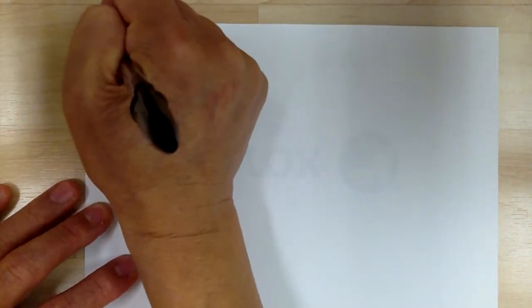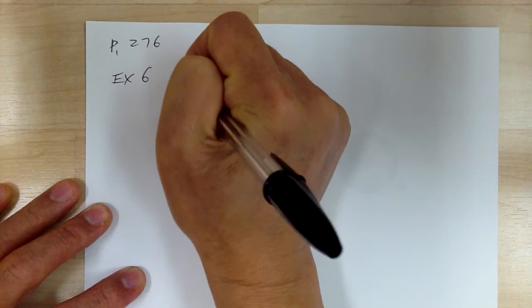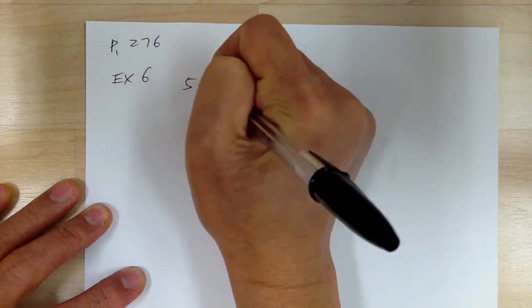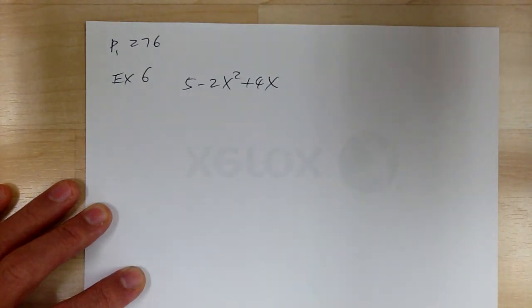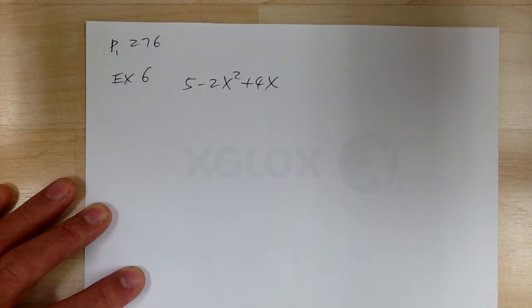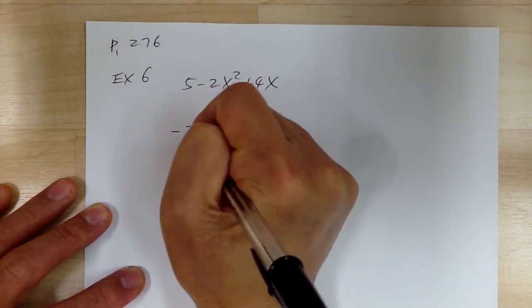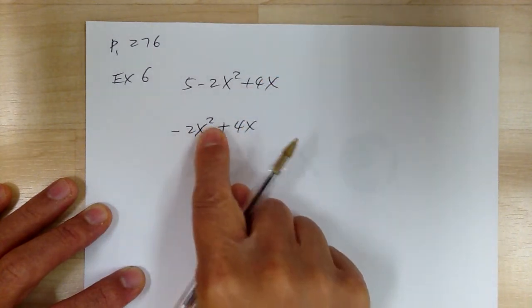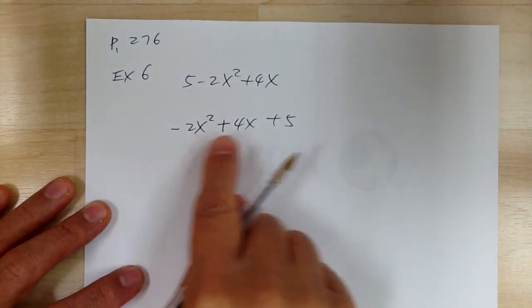Let's go over how to arrange polynomials. On page 276, example 6: you've got 5 minus 2X² plus 4X, and they want you to arrange in descending power of X. Descending means going down, so you want to go from highest to lowest. Start with the highest degree and go down — second degree, first degree, then zero degree — based on the X.